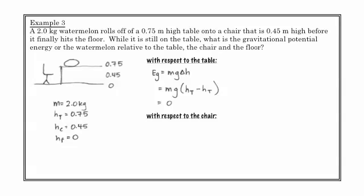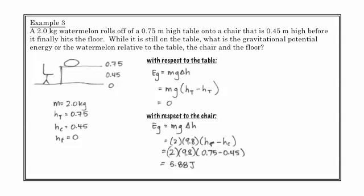If we measure it with respect to the chair, then what we have is we have mass times gravity times height. And here it's moving from the table to the chair. And so that is a little bit of a different outcome. 2 is the mass. 9.8 is g. And then going from the chair to the table, if we measure that change in height, we have 0.75 minus 0.45. So we get 5.88 joules.